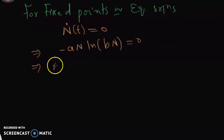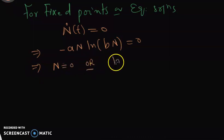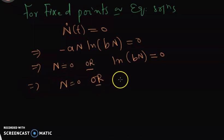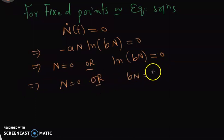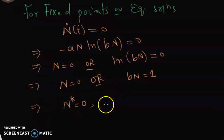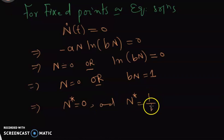Setting the derivative to zero gives us n equals zero, or the natural log of b·n equals zero. From the second case, b·n equals e to the zero, which is one, meaning n equals one over b. So one equilibrium point is n equals zero and the other is n equals one over b.